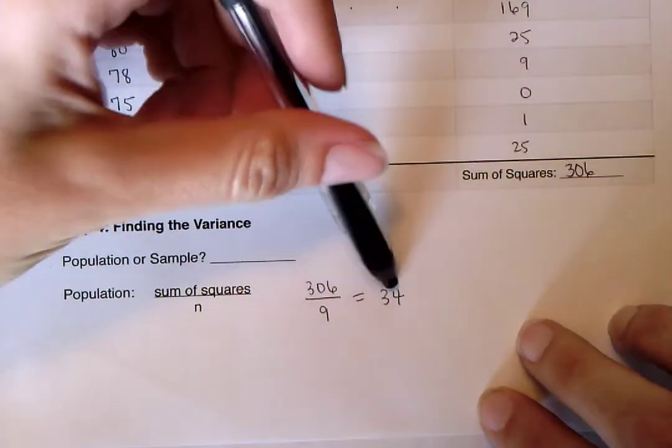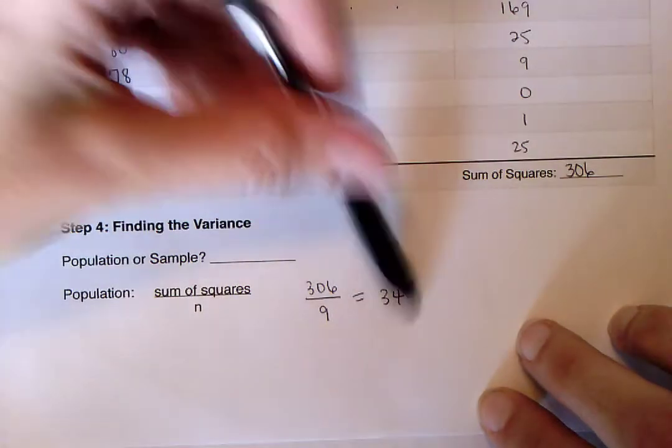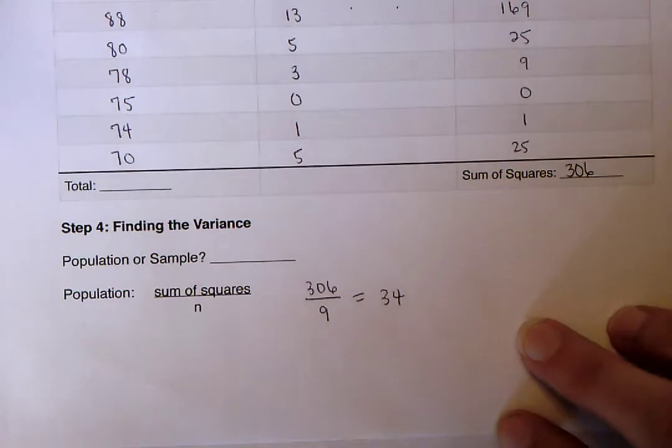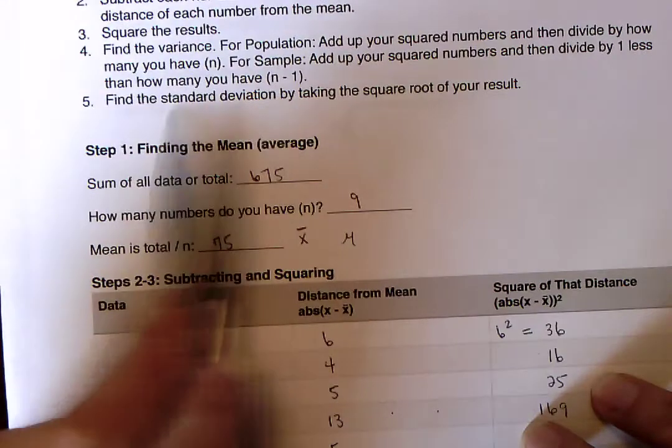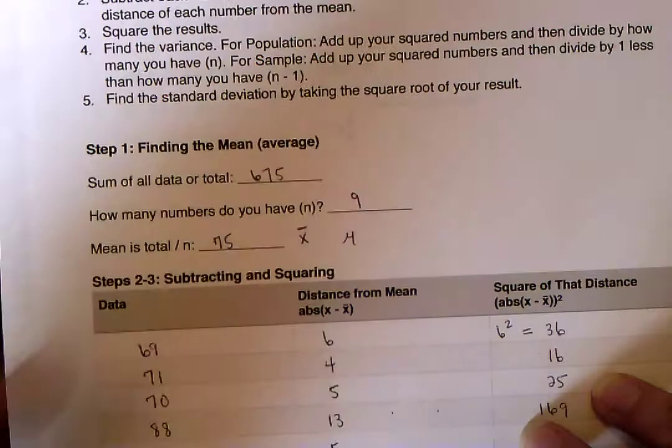So again, if it's a population, let's say this is a population. So again, the sum of the squares is 306, and we would divide that by n, or nine. So 306 divided by nine is actually 34, that's very nice. Alright, so if we were to, again, have a population, that would be our variance. It would be 34.